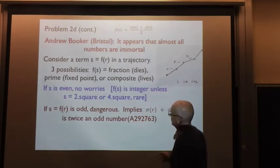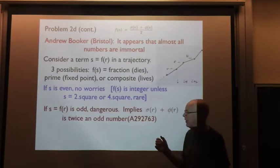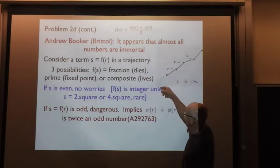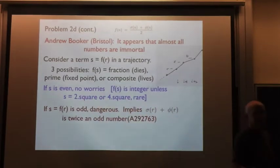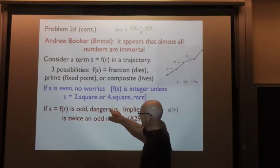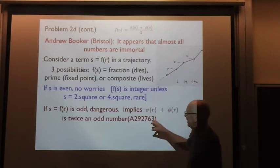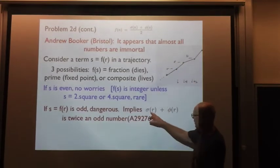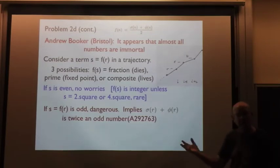His analysis goes like this. If S was even, we don't really need to worry about it, because if you've got an even number, the next F of S is going to be an integer — unless you were unlucky that S was twice a square or four times a square. But that's one over root N, so that's very unlikely and we can forget that. The dangerous things we have to worry about are the odd numbers. That means the previous number R led us to an odd number — sigma of R plus phi of R is a singly odd number, i.e., twice an odd number.